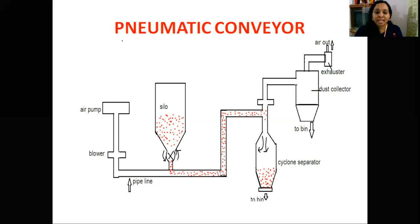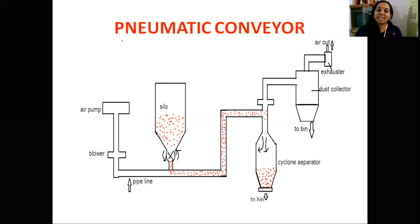The feed is suspended in the air. At the conveyor, when the feed is in a fluidized state, the feed material is suspended. The feed is transported through the pipeline region in this fluidized state.